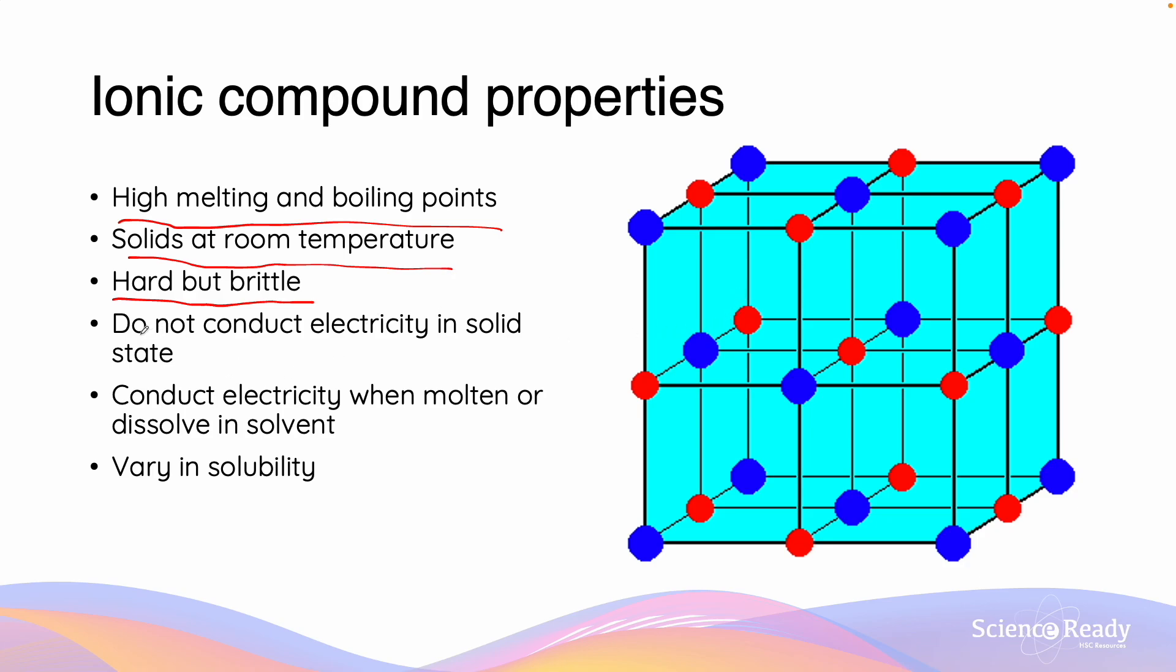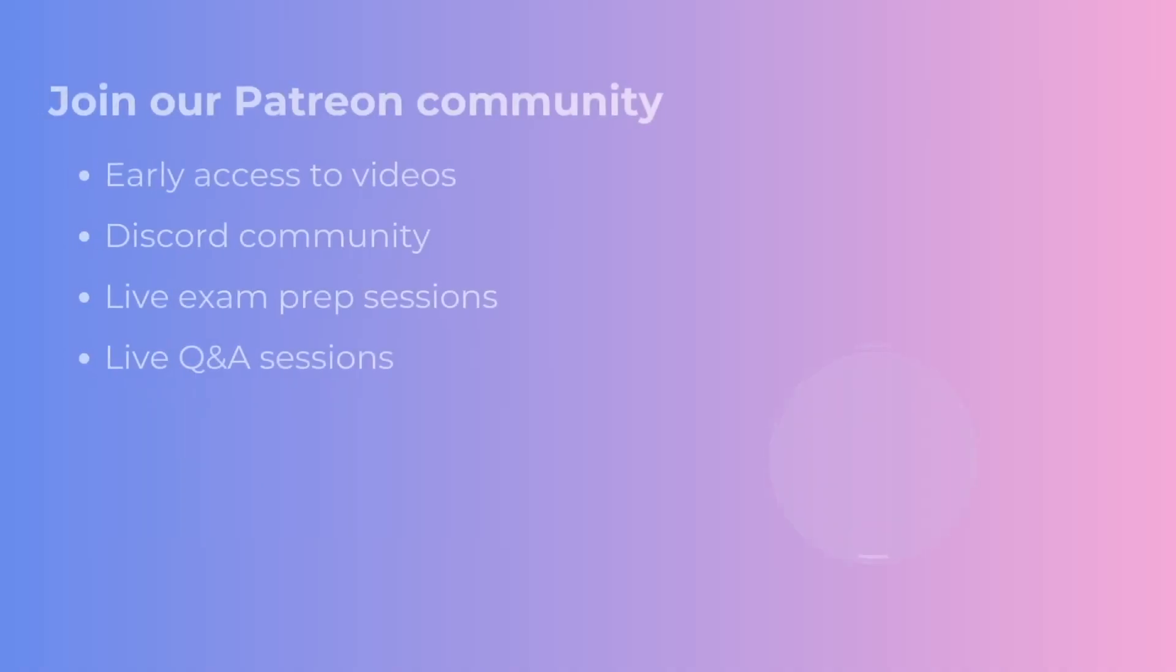Ionic compounds also do not conduct electricity in solid state. The reason for this is because there are no free charge carriers since all of the ions have been tied up in the lattice. But they do conduct electricity when they are molten or dissolved in solvent. This is because this leads to the release of the ions and the charges that are in their bonds. Ionic compounds also vary in their solubility, mostly being soluble in water, while others are a bit more insoluble such as barium sulphate.